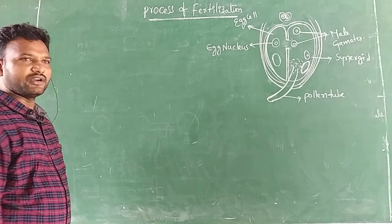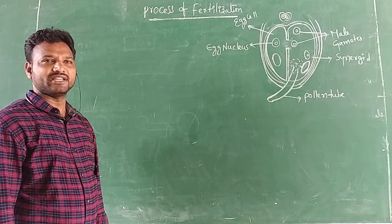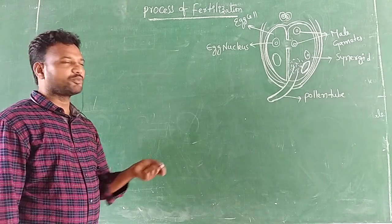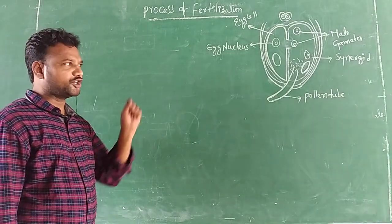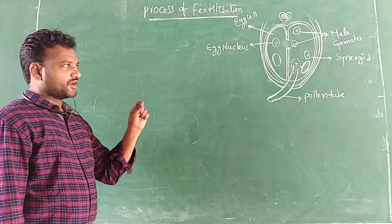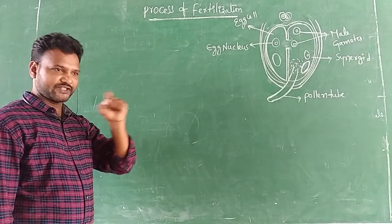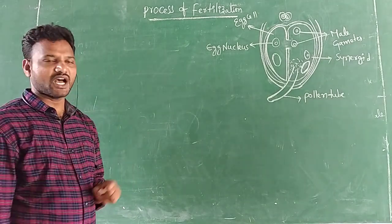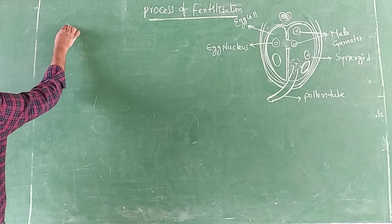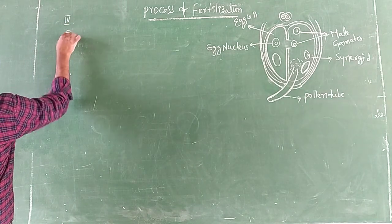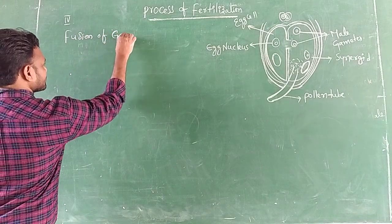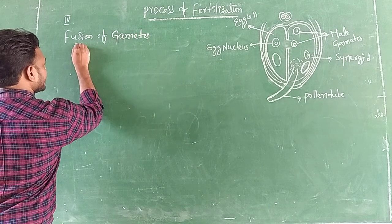The first step is entry of pollen tube into the ovule by three ways: porogamy, chalazogamy, and mesogamy. Then the pollen tube enters into the embryo sac by the filiform apparatus. The third step is release or discharge of male gametes. The fourth step is fusion of gametes — that is the continuation of yesterday's class.